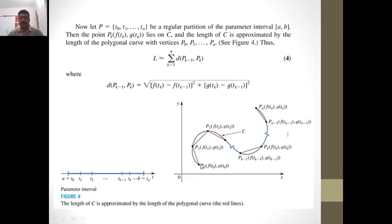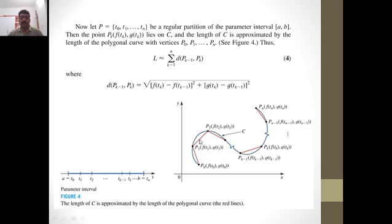So we are assuming that, instead of finding the length of the smooth curve directly, we first find the length of this polygonal curve. You can see that when the lengths of the sub-intervals t₀, t₁, t₂, ..., tₙ are very small, by the idea of calculus, this polygonal curve tends to the exact curve.